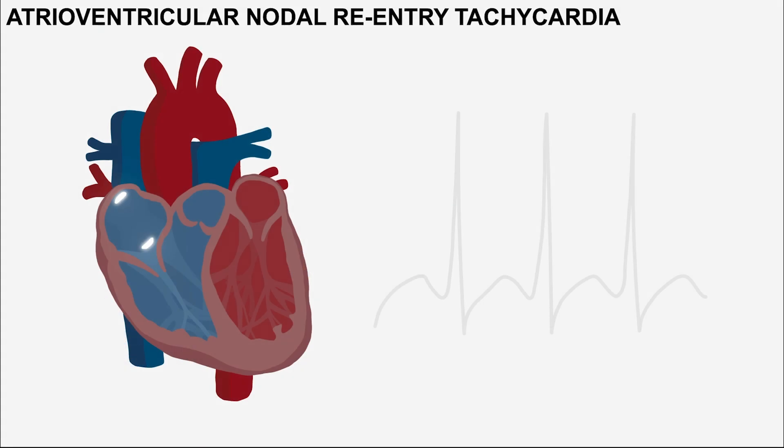Supraventricular tachycardia, or SVT, refers to a rhythm abnormality that originates from above the level of the ventricles. There are two main types that are usually referred to as an SVT. One of which is atrioventricular nodal re-entry tachycardia, characterized by the formation of a re-entry circuit within the AV node.